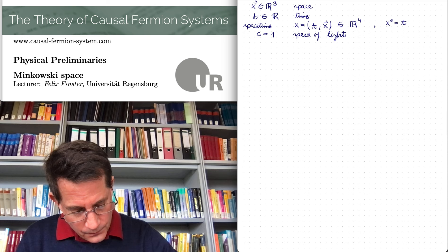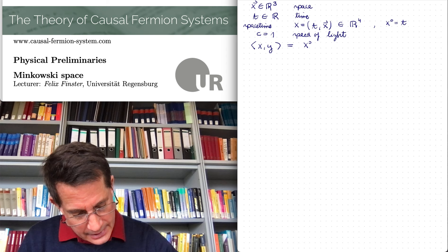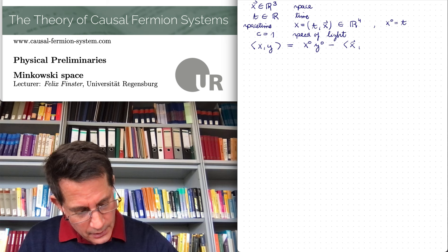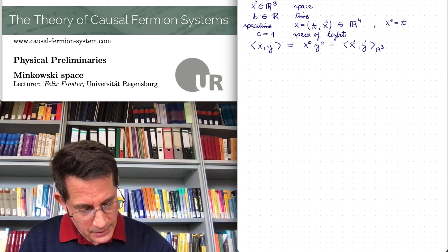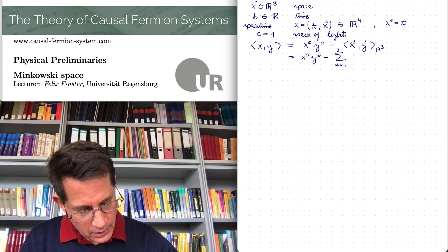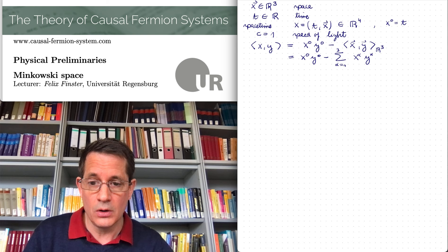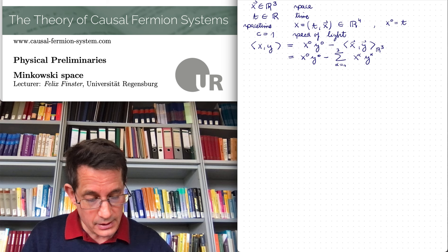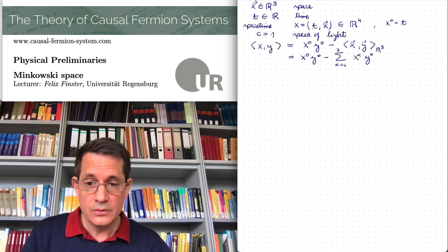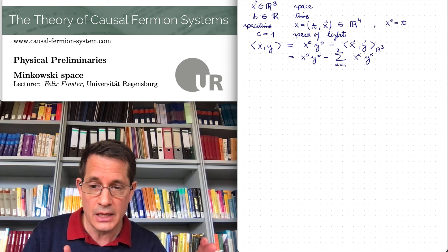How does this inner product look? If I take the inner product of two spacetime vectors, this is x⁰ times y⁰ minus the Euclidean scalar product in R³, or written out in components: x⁰y⁰ minus the sum alpha from 1 to 3 of x^alpha y^alpha. So this is a bilinear form on R⁴, or an inner product. However, it is not a scalar product because there's a minus sign. And the sign of this inner product is what encodes the causal structure.